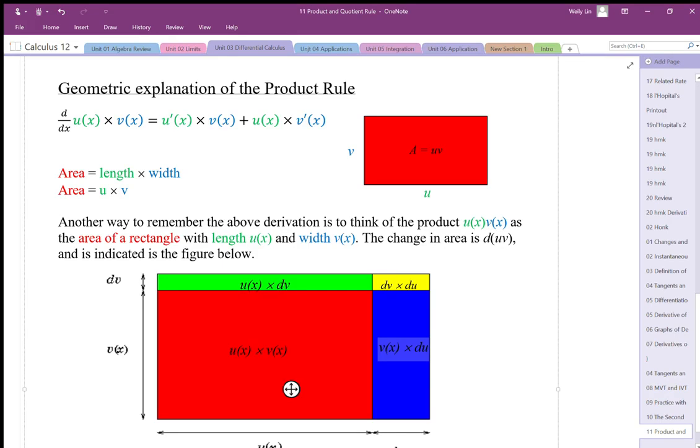Why do we need the product rule when we differentiate a product? The reason is because when we think of a product, the product is actually the area of a length times width.